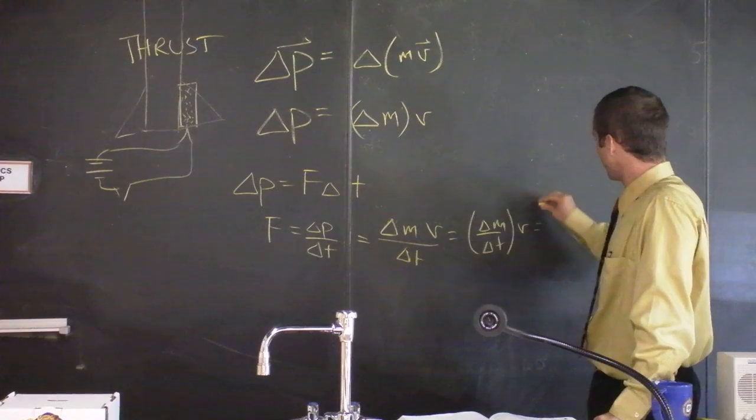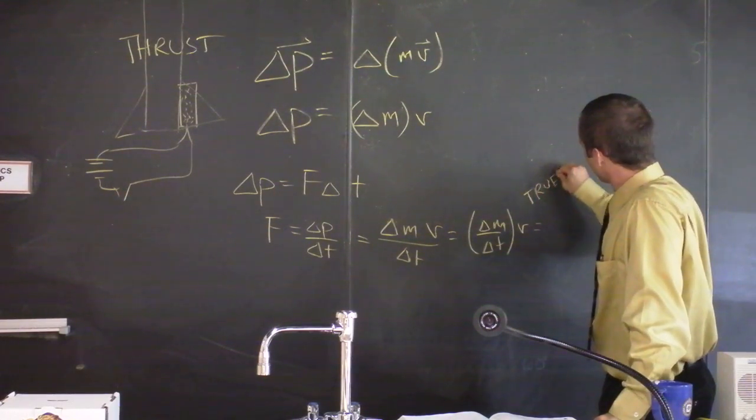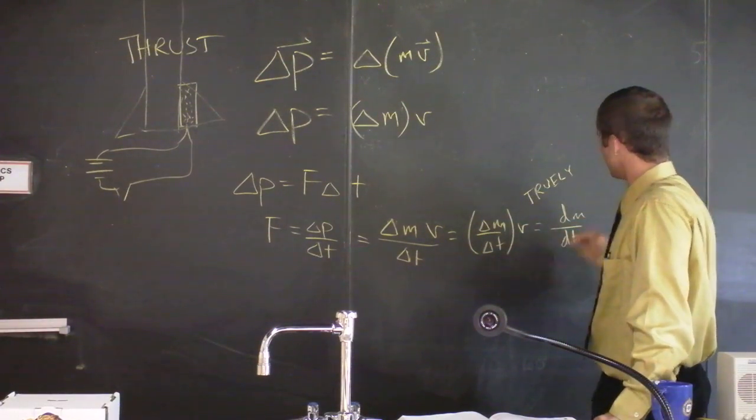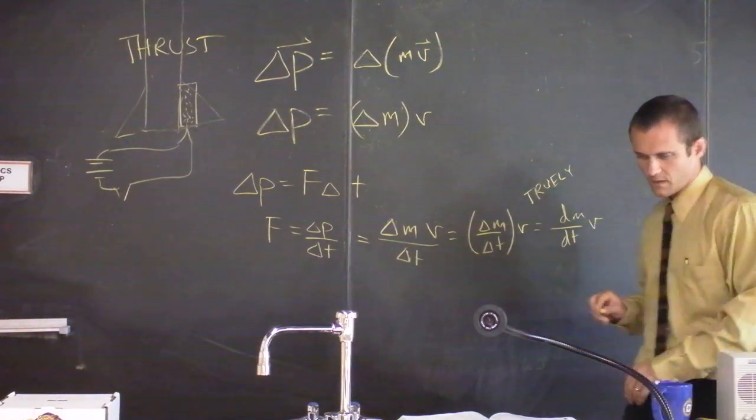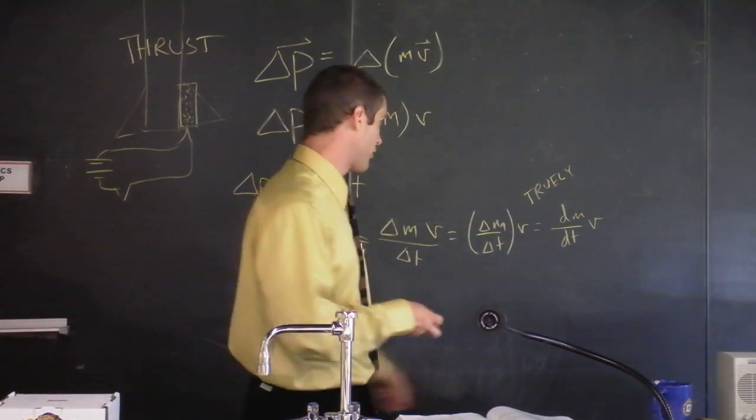And if we want to be honest about this, we could say truly we've got dm dt, a derivative of the mass with respect to time times the velocity. And that's the definition of a thrust. This is a thrust force because mass is being spit out of the back of the rocket.